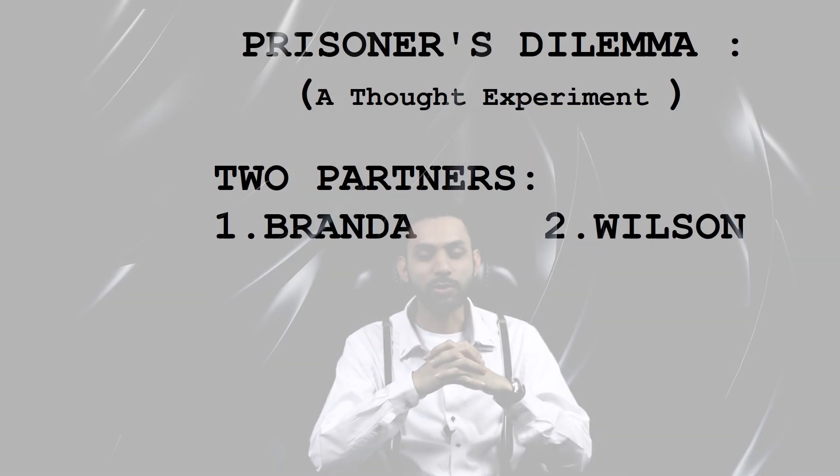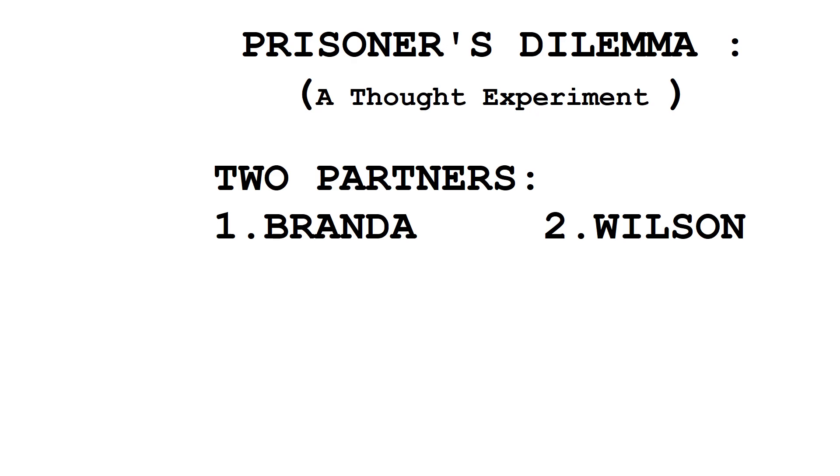There is a classic experiment in game theory called the Prisoner's Dilemma. It involves one person named Brenda and one named Wilson, who are partners.